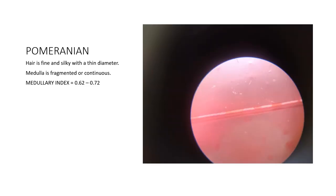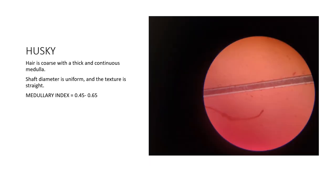The first sample shown in the video is the Pomeranian. You can see the red hair sample — the hair is fine and silky with a thin diameter, and the medulla is fragmented or continuous. The medullary index ranges from 0.62 to 0.70. For the husky, we printed the image on paper and got 0.5, which falls within the husky's medullary index range of 0.45 to 0.65 — confirming it is animal hair and the correct breed.